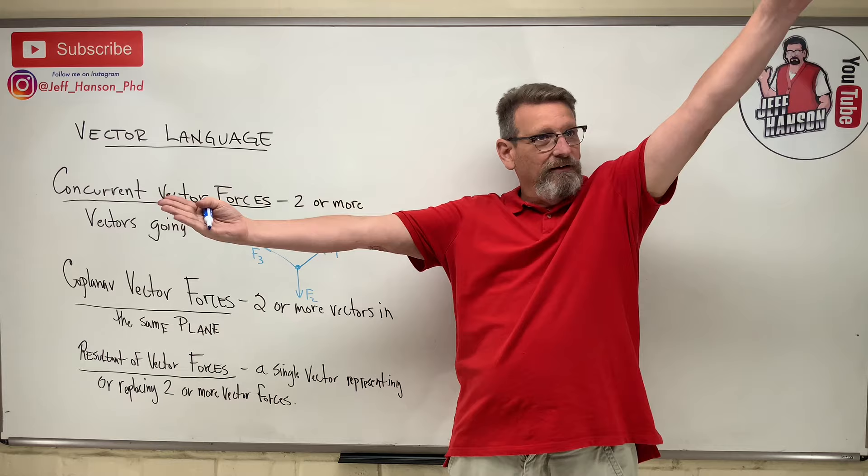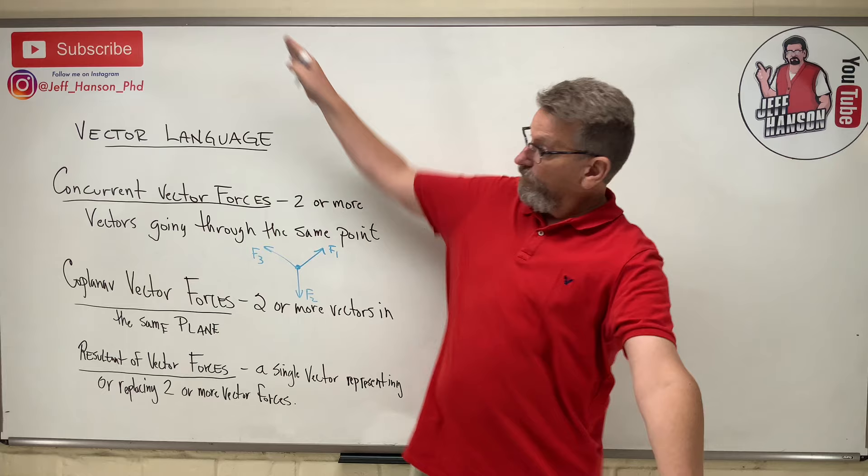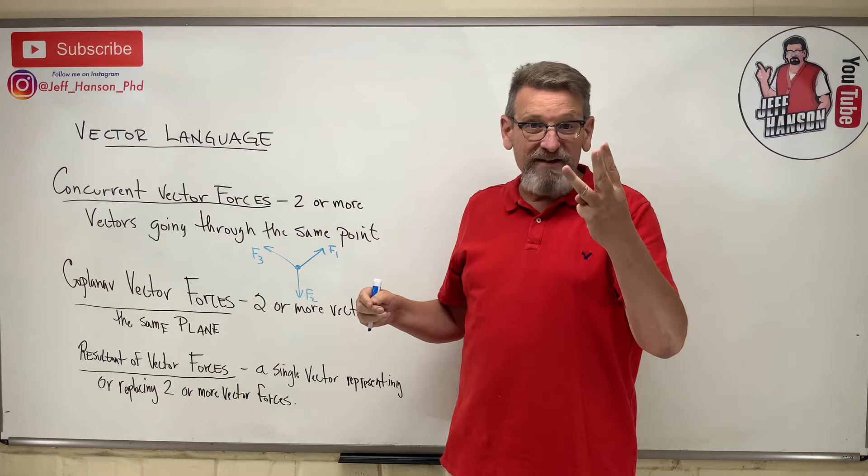So what if like one was going that way and one was going that way? Well, yeah, there's a plane that would contain both of them, isn't it? What about like that and like that? Yep, there's a plane that contains those. But what about three vectors? Are they always in the same plane?